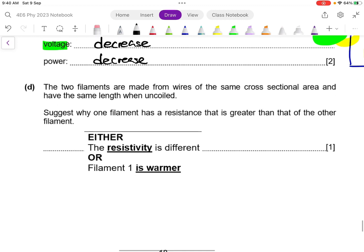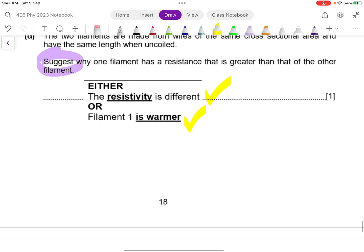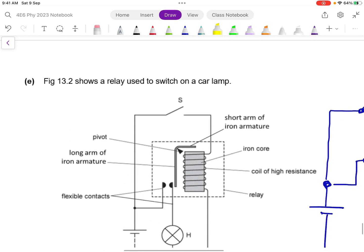For your part D, they are asking you to give a possible reason why the two filaments will have different resistance. So there are many answers. The two most common answers would be they are made of different material and hence the resistivity are different. The other one could be one of the filament has actually better heat conductivity and the other one is worse. So one of them will have different temperature and for non-ohmic resistor, temperature will play a part in the resistance.